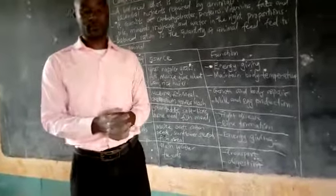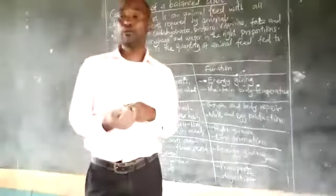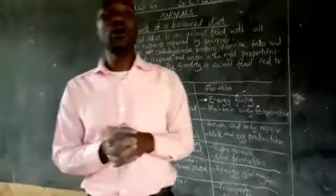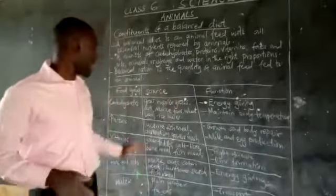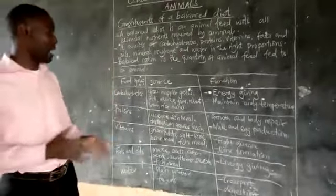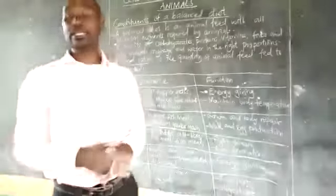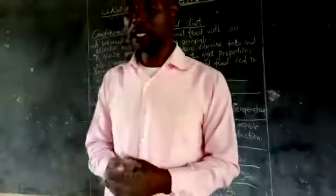So a balanced diet is an animal feed that has all the nutrients required by an animal. So these are the nutrients which form a balanced diet. Thank you and let us meet in our next lesson.